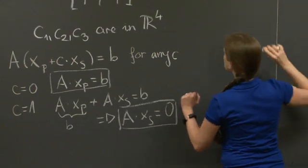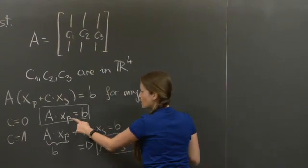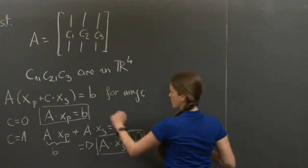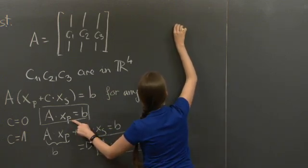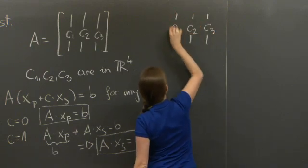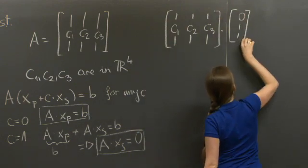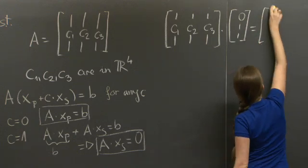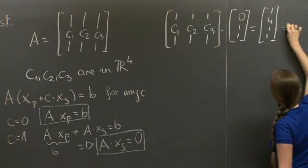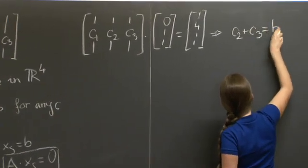A times xp equals B means that the linear combination of C1, C2, and C3 encoded in the vector xp, which is 0, 1, 1, gives the vector B. So C1, C2, C3 times 0, 1, 1 gives us 1, 4, 1, 1. In other words, C2 plus C3 equals B.